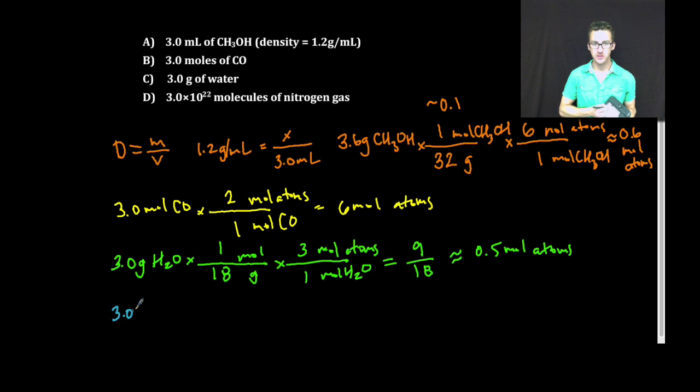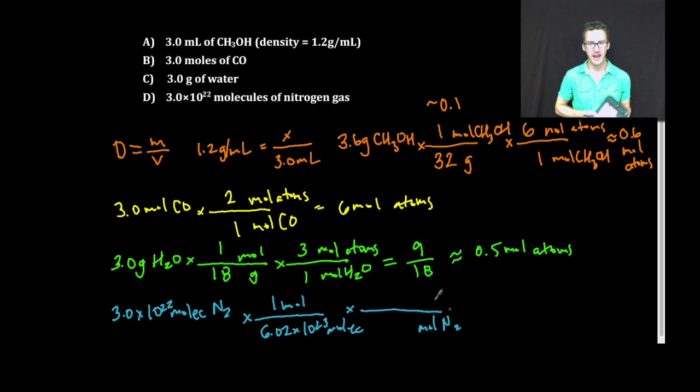Finally, we've got 3.0 times 10 to the 22 molecules of nitrogen gas. Don't forget that nitrogen is one of those diatomics. Converting this time, I'm going to go 6.02 times 10 to the 23 molecules in one mole. And then for every mole of nitrogen, we're going to have two moles of atoms.